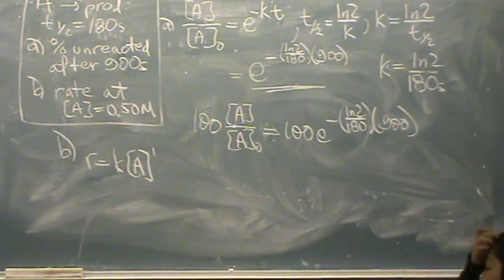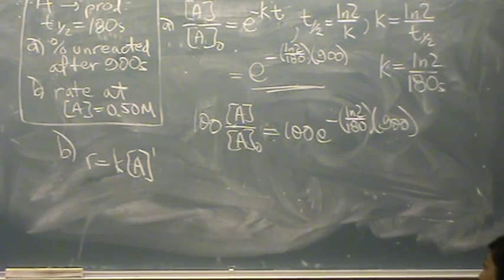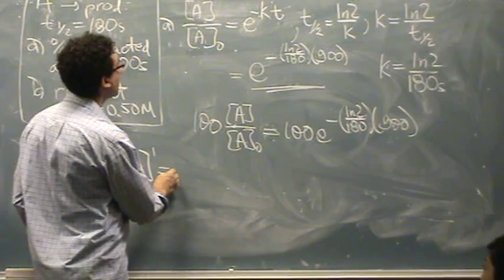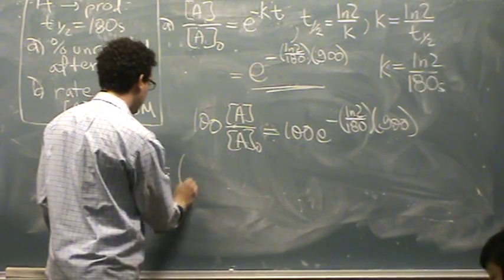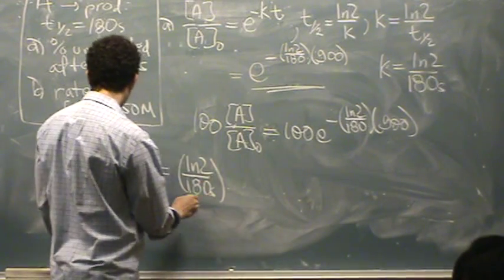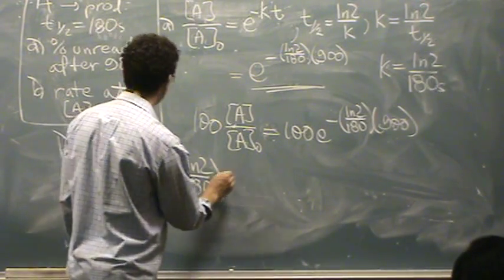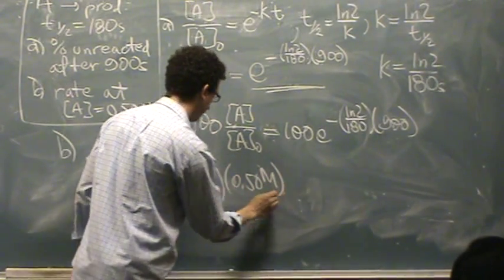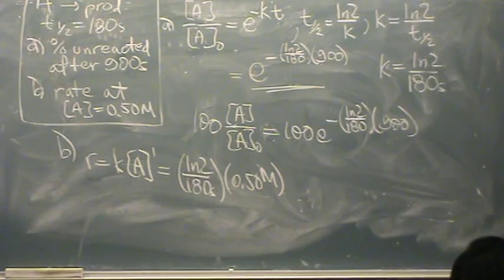If I was given information about time and two different concentrations, I'd use the other equation. So just use the equation that matches the information you're given. K is up there: natural log of 2 over 180 seconds times [A] is 0.50 molar. So that rate, whatever that calculates out to be, that will be your answer. It's going to be in molarity per second units.